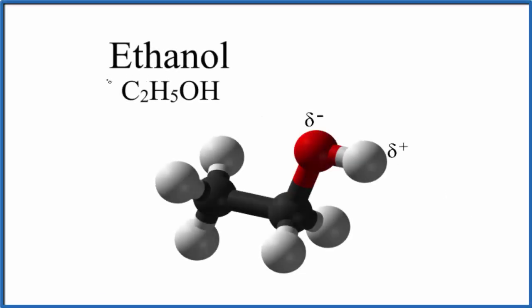In this video we'll look at the solubility of ethanol. This is often written as C2H5OH. We have our two carbons right here and then we have our OH group up here.